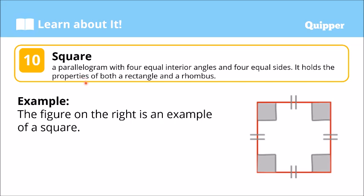A square is also a quadrilateral because it has four sides. It's a parallelogram since two pairs of the opposite sides are parallel. And what makes it different is that it has four equal interior angles and four equal sides — para siyang combination ng rectangle at saka ng rhombus.